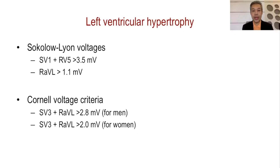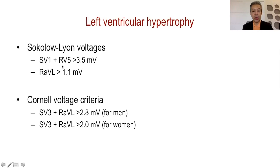When it comes to the ventricles, we have validated criteria made by different authors. For left ventricular hypertrophy, this is the Sokolov-Lyon voltage criteria, which looks at the depth of S in V1 added to the height of R in V5. If it is more than 3.5 millivolts — or 35 millimeters or 35 small squares — then that is LVH. Alternatively, if R in aVL is more than 11 millimeters or 1.1 millivolts, that also meets the Sokolov-Lyon voltage criteria.